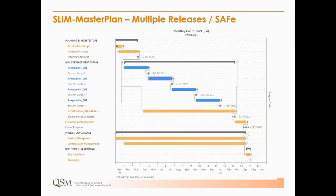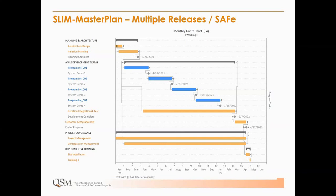SLIM Master Plan models scaled Agile methods. I did a webinar on exactly this a couple of years ago, available on our website. What you're looking at here is several program increments — estimated in SLIM Estimate and pulled in here. SLIM Master Plan allows us to account for other parts of the project or program that may not be software but have a schedule or cost impact, and to handle dependencies — particularly in very large organizations doing scaled Agile, where there can be many dependencies.